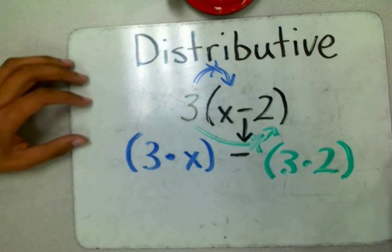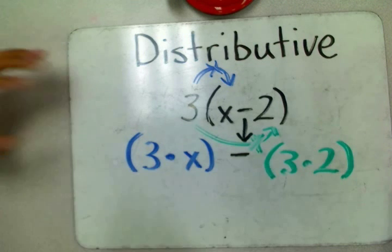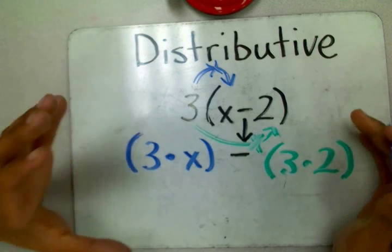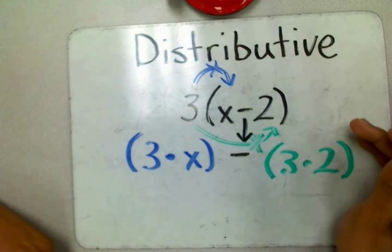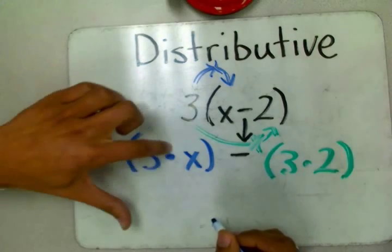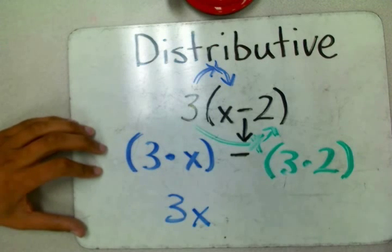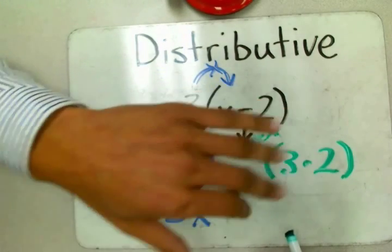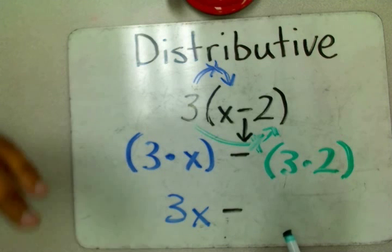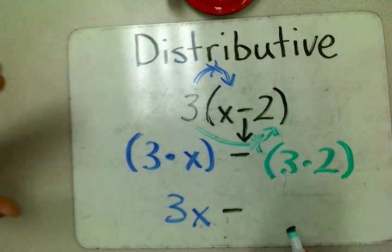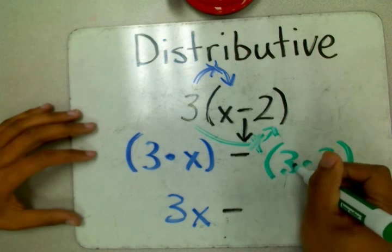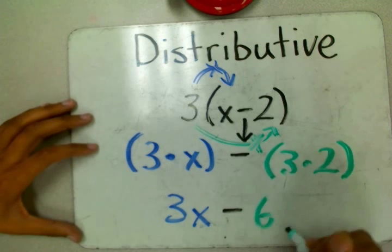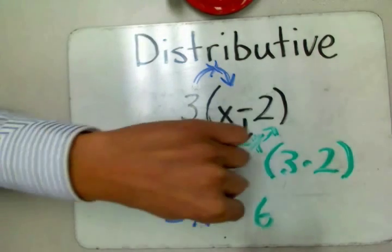Let's keep on going. Sometimes on the test it will be just this by itself, and then other times they'll actually take it a step further and ask you to actually solve it. So 3 times X is 3X. What am I doing with that 3X? I'm subtracting it. 3 times 2 is 6. I'm subtracting 6 from 3X. This is our final answer.